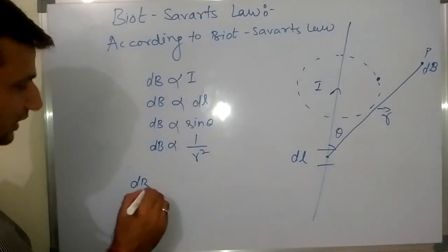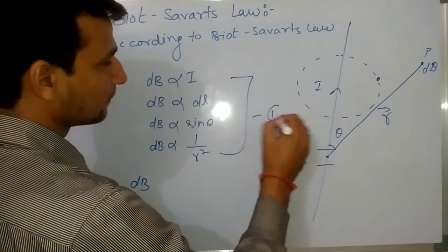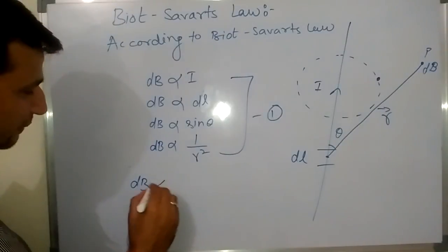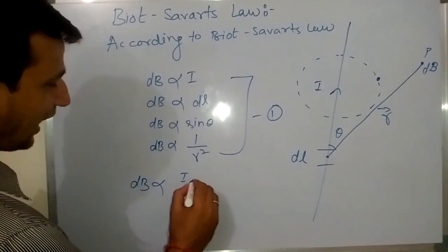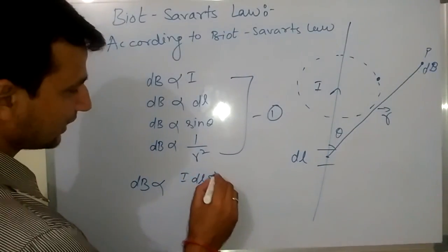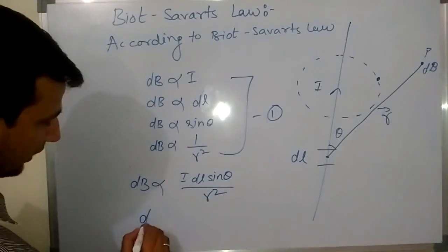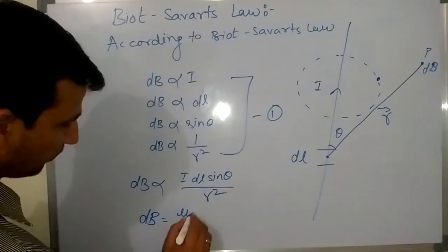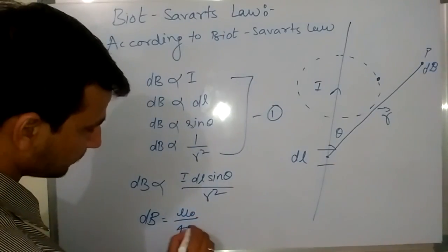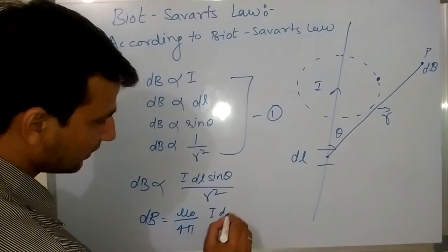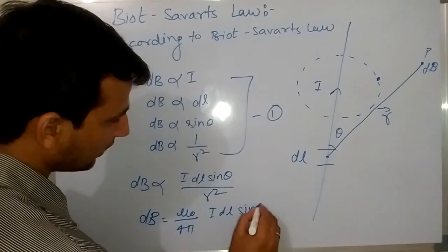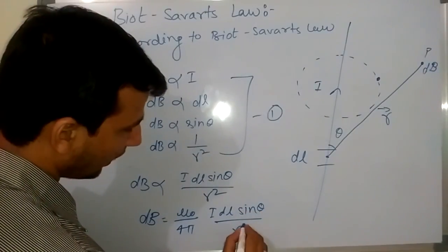Now if we combine these relations, we get dB is directly proportional to I DL sin theta upon r squared, or dB equals mu naught by 4 pi times I DL sin theta upon r squared.